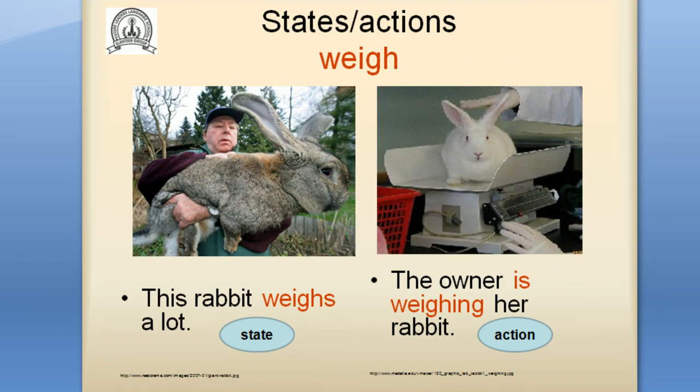Verb: weigh. In example 1: 'This rabbit weighs a lot' — I describe the weight, so it's a state. In example 2: 'The owner is weighing a rabbit' — the owner is doing something to find out the weight of a rabbit, so it's an action verb.